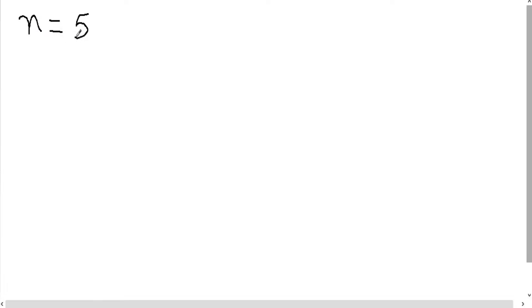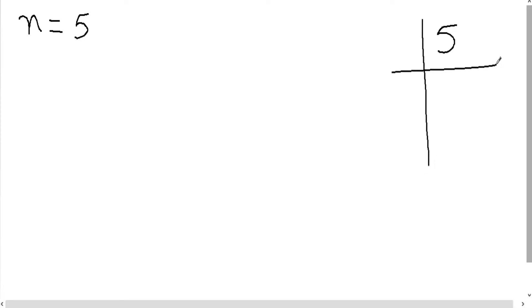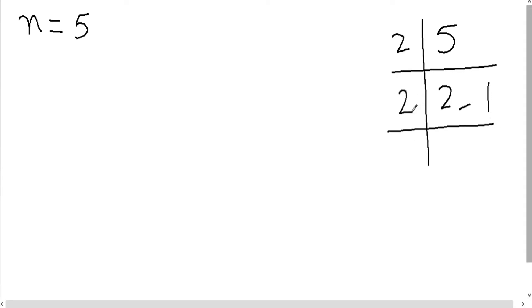Is practical ko samajhne ke liye, the first thing you need to know is: agar user se number loon aur wo 5 enter kar de, to 5 ko binary mein convert kerne ke liye hum repeatedly 2 se divide karte hain aur jo remainders hote hain woh answer ke taur par lete hain.